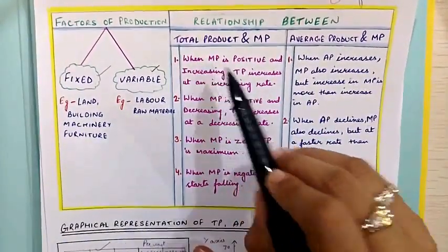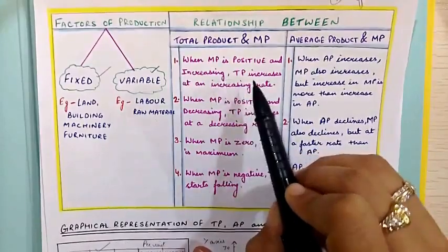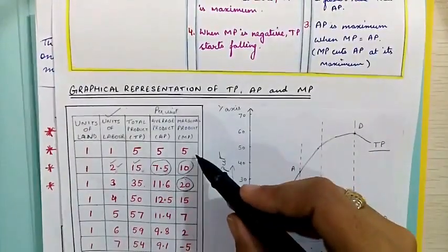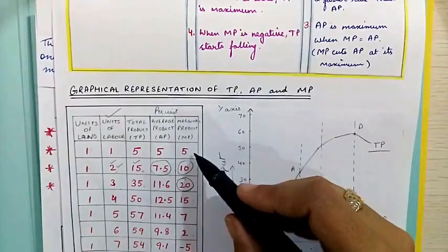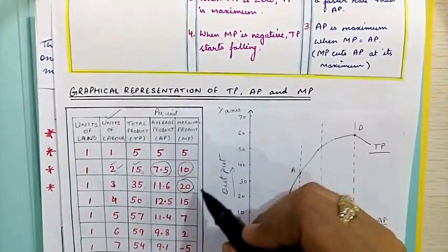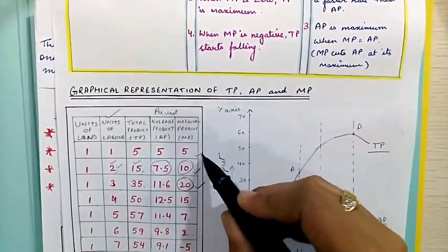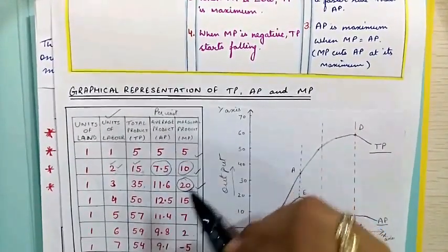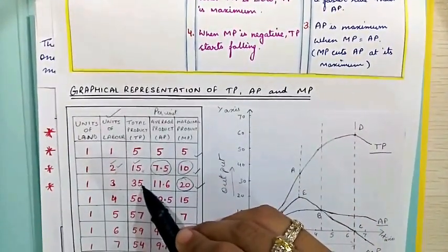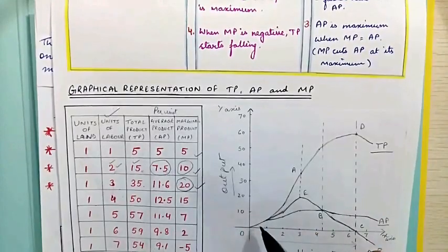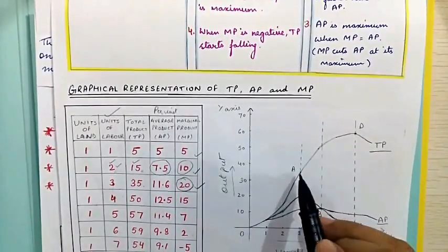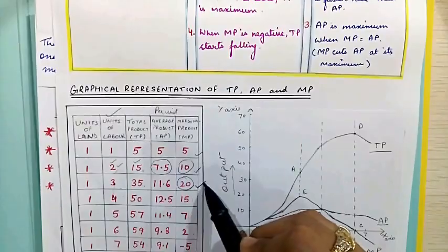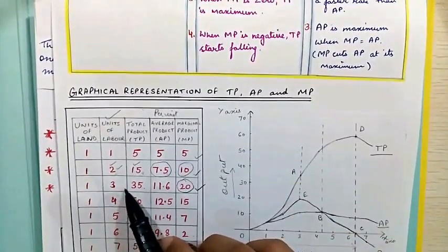When MP is positive and increasing, TP increases at an increasing rate. MP is increasing till the third unit, and till this point, our total product will increase at an increasing rate. So the total product is increasing at an increasing rate till the employment of the third unit of variable factor.